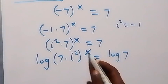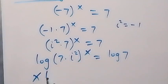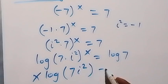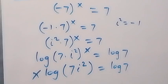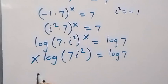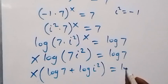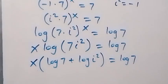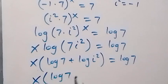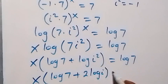Applying log to both sides and bringing the power x to the front, we have x times log(7·i²) equals log 7. Separating the product, since this is x times bracket log 7 plus log(i²), and log(i²) = 2·log i, this becomes x times (log 7 + 2·log i) equals log 7.